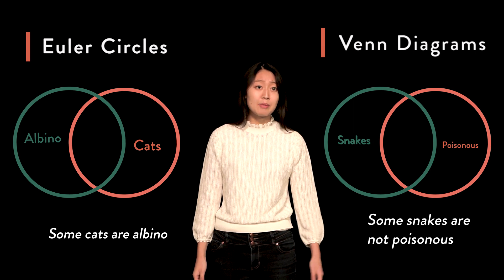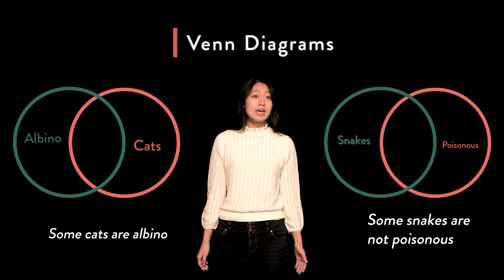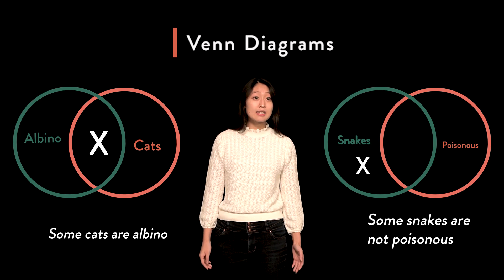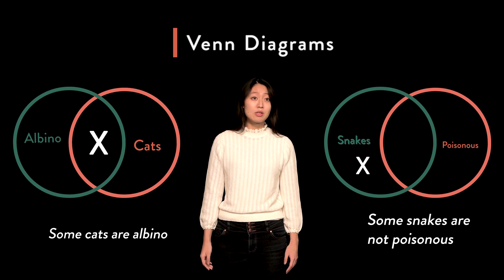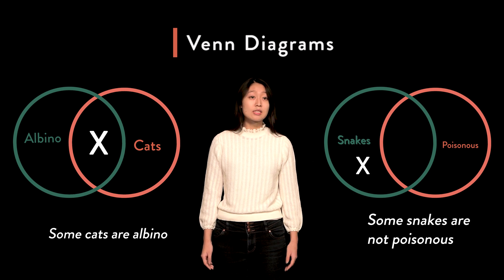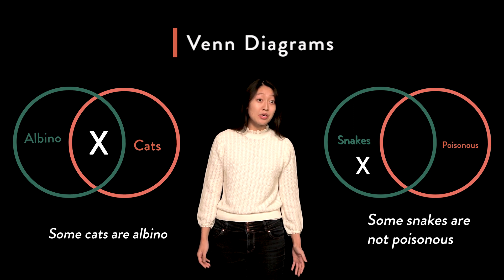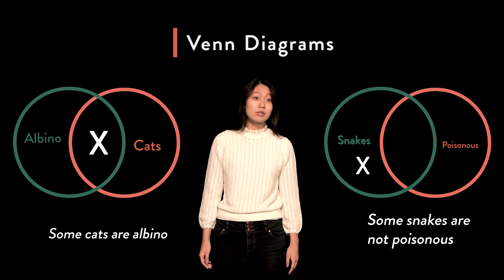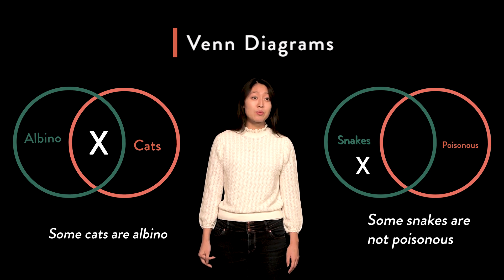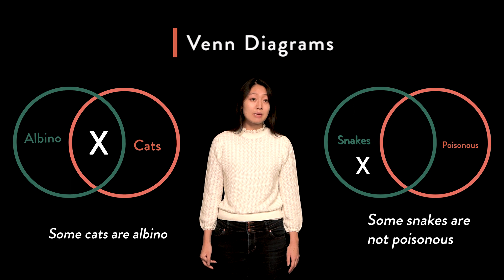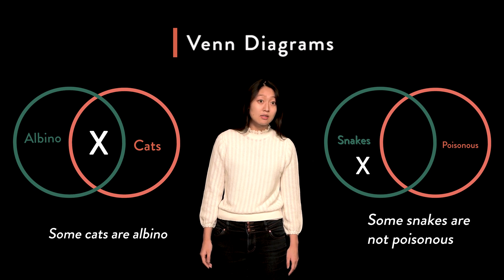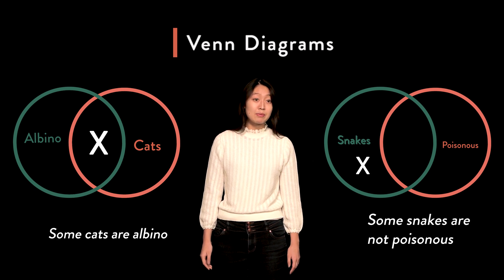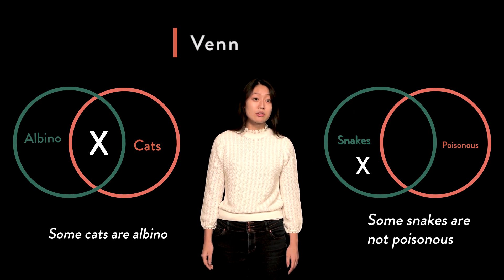This is where Venn diagrams come in handy. In the case of Venn diagrams, we use an X to signify that something belongs to the category in question. On the left, we see that the region labelled 'cat and albino' is marked with an X, representing the particular affirmative proposition 'some cats are albino.' On the right, we see that the region labelled 'snake but not poisonous' is marked with an X, representing the particular negative proposition 'some snakes are not poisonous.'